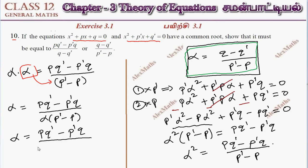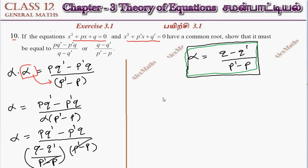Now substituting alpha = (q - q') / (p' - p) into the expression, we derive the final formula for the common root alpha in terms of p, p', q, and q'.